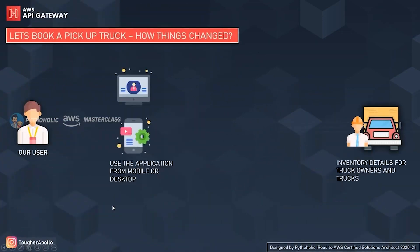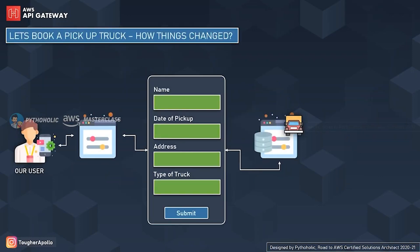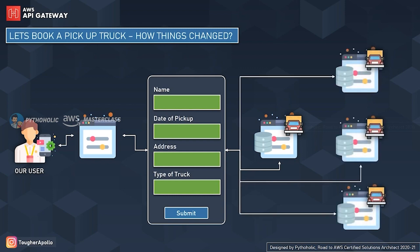Now let's see what happened when things changed and people started migrating towards applications and websites that could provide the same service at their fingertips. They got a form where they could fill in the details of the service they wanted, make the booking, and based on truck availability, the system would automatically let them know if their booking was successful and the amount they'd be charged. When you clicked submit, the request would fly to the servers and return a result.